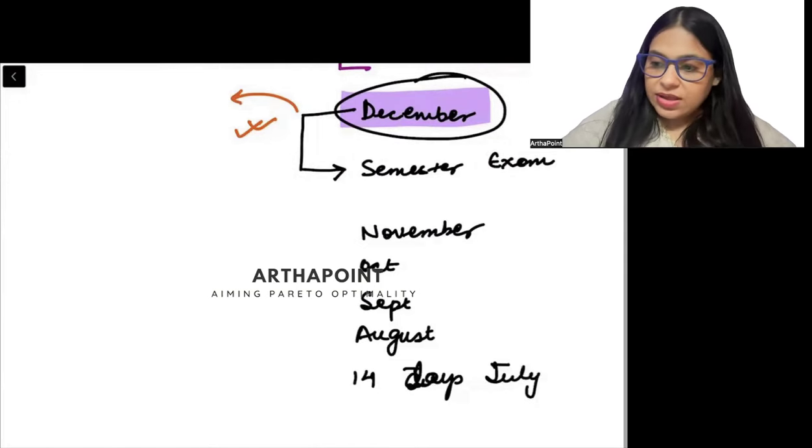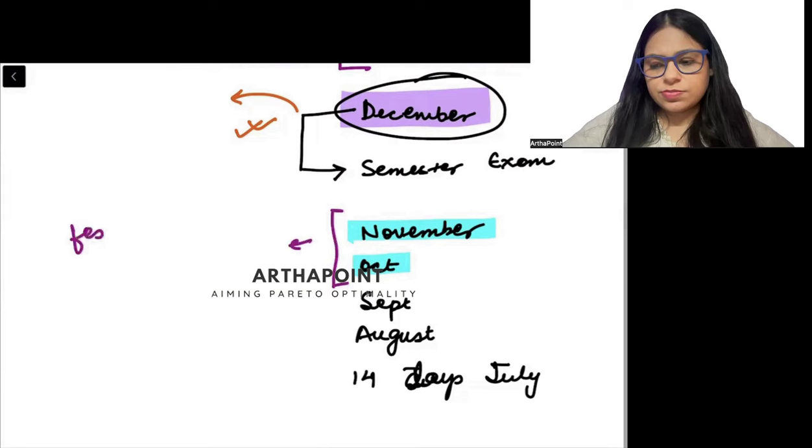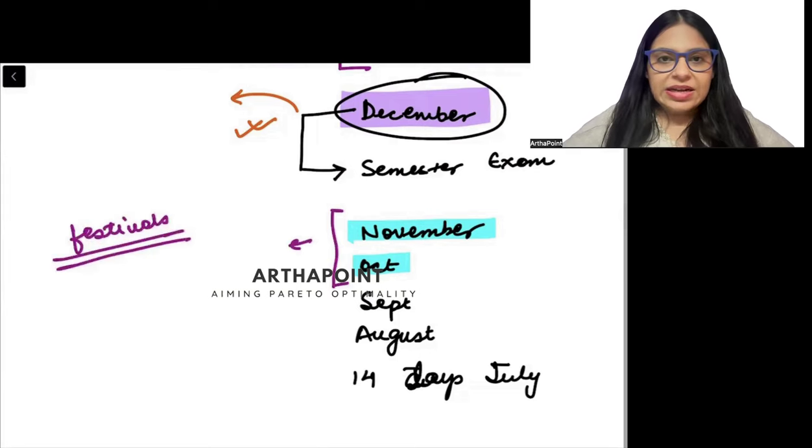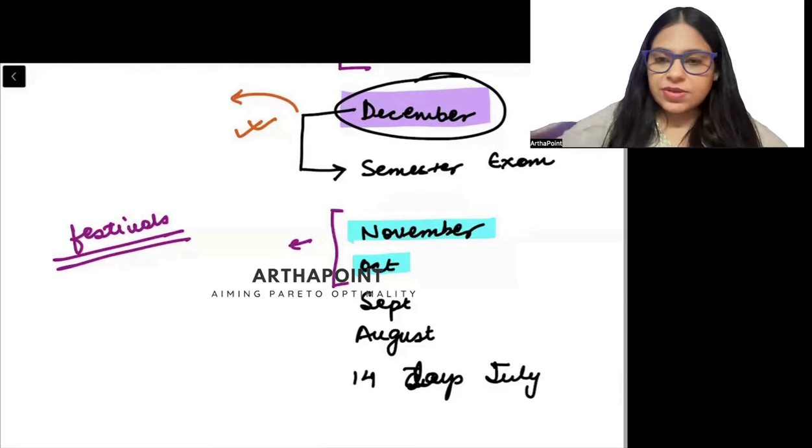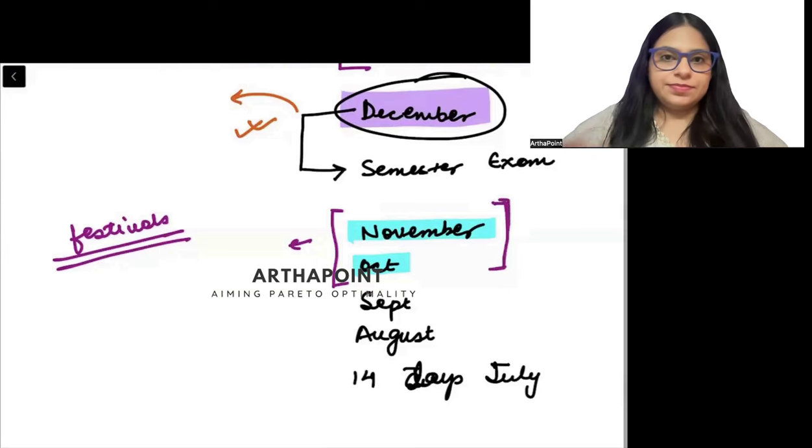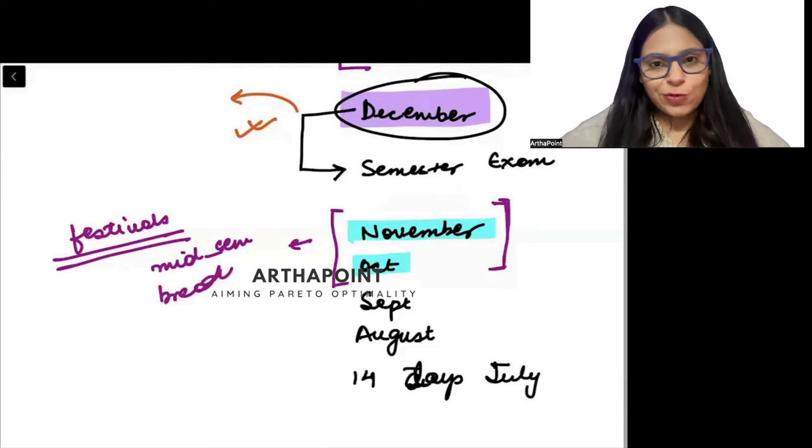Now in November and October you have multiple festivals also. I can tell from my personal experience that if I club November and October together for Diwali, Durga Puja, Eid, this that - together all festivals together, 10 days would go. I can guarantee you that you will give 10 days away in these festivals, right?